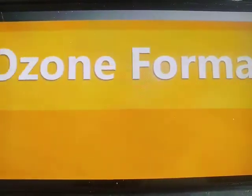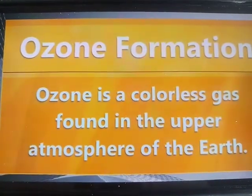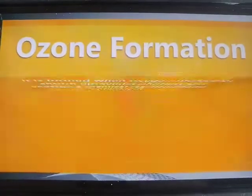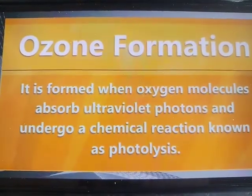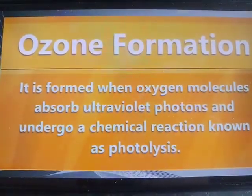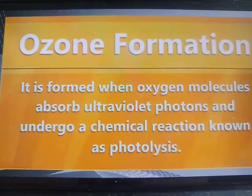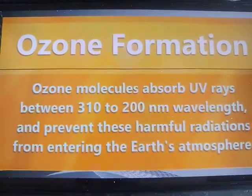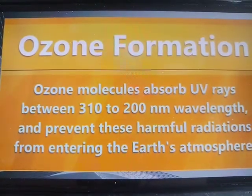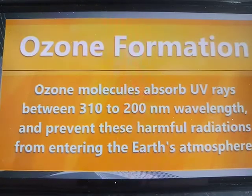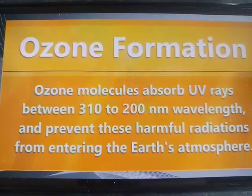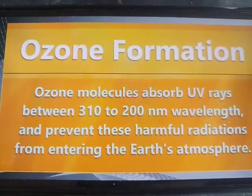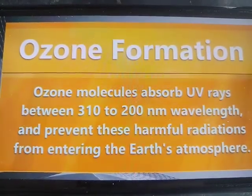The formation of ozone: Ozone is a colorless gas found in the upper atmosphere of the earth. It is formed when oxygen molecules absorb ultraviolet photons and undergo a chemical reaction known as photolysis. These ozone molecules absorb UV rays between 310 to 200 nanometer wavelength and prevent these harmful radiations from entering the earth's atmosphere.